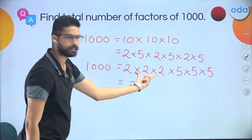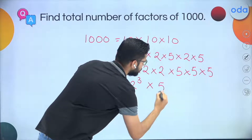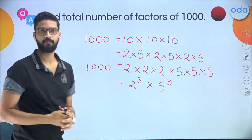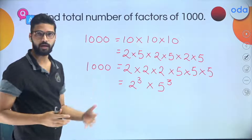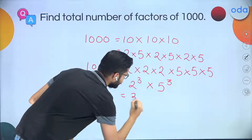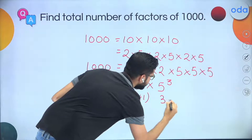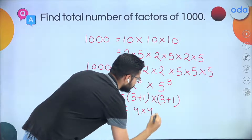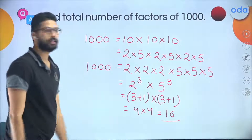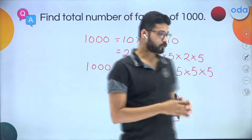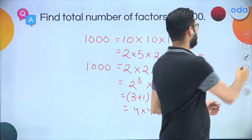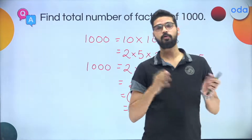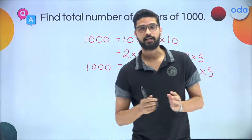Writing 1000 in powers form: there are three 2s, so 2 raised to the power 3; and three 5s, so 5 raised to the power 3. Step 3 — add 1 to each power: 3 + 1 = 4, and 3 + 1 = 4. Step 4 — multiply: 4 × 4 = 16. So the total number of factors of 1000 is also 16, calculated without listing any factors.